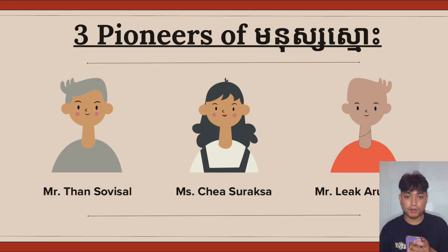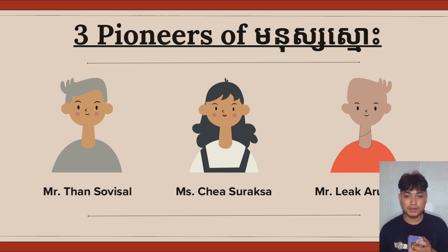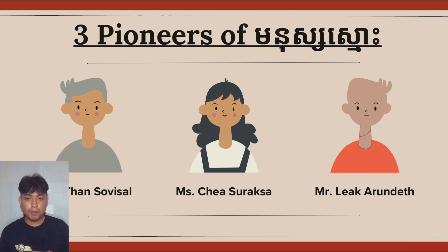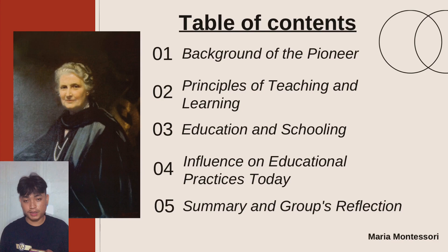Our group consists of three members, also known as three pioneers of Manusma. We have Mr. Lea Rundet, Ms. Jesu Rese, and Mr. Tan Sovisa. Moving on to the table of contents, in our topic we're going to briefly talk about five contents.